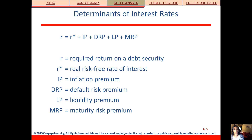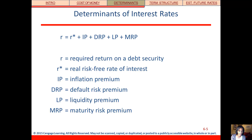If we break down r, the nominal rate, r-star is going to be part of the breakdown of that nominal rate, and we have a few more components to talk about. These are premia, or premiums, that we add on to that real risk-free rate to arrive at the nominal rate. Those four premiums that we add are: an inflation premium — that's an extra cost that we add on to the real risk-free rate.